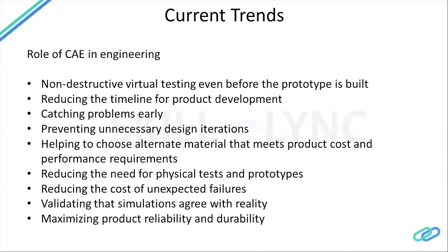CAE prevents unnecessary design iterations by helping to choose alternate materials, which reduces product cost. For example, on certain products — mostly in plastics and polymers — there are a large number of materials to choose from, and you can adjust the strength through Young's modulus using glass-filled fiber. When you perform a CAE analysis and calculate the loads, you can choose from different materials for your product. This also reduces the need for physical testing and reduces the cost of expected failures, while validating simulations against reality.